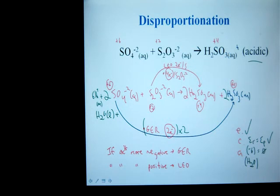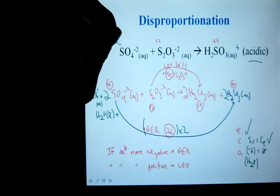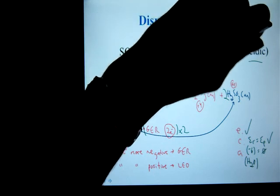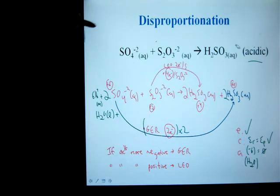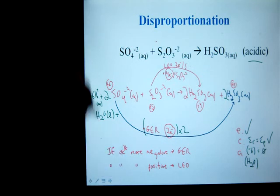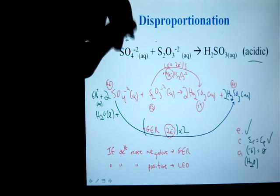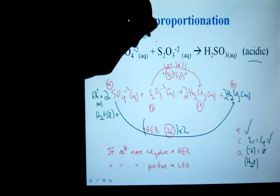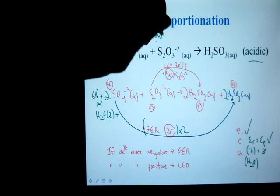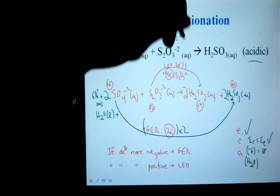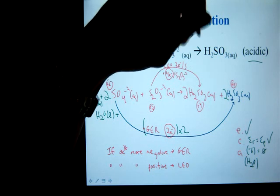So overall net reaction: one water plus six H pluses plus two sulfates plus S2O3 produces two H2SO3s and another two H2SO3s. Well, that's not very clean. So let's clean that up a little bit. Write it again up top. And no matter how you do this, there's a lot of steps. So that's why these questions are a bit of a pain in the butt. Net reaction: six H plus, plus one water, plus two sulfates, plus this thiosulfate S2O3 produces four H2SO3.